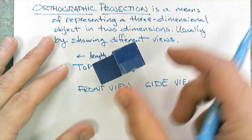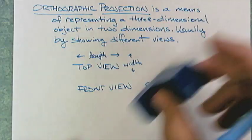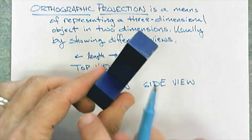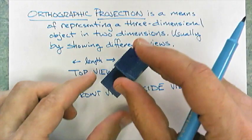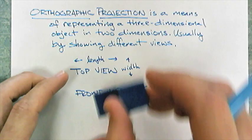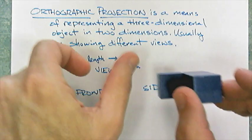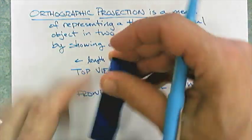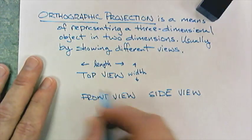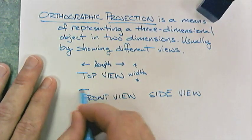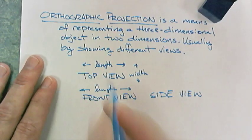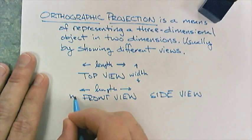If I'm looking at it from the front, I can still get the width, or one dimension this way, but I'm going to get a height dimension. So maybe I get the length, the same dimension. It's going to match the top view, but now I get a height dimension.